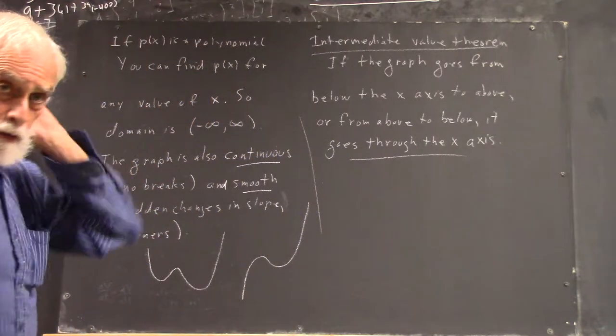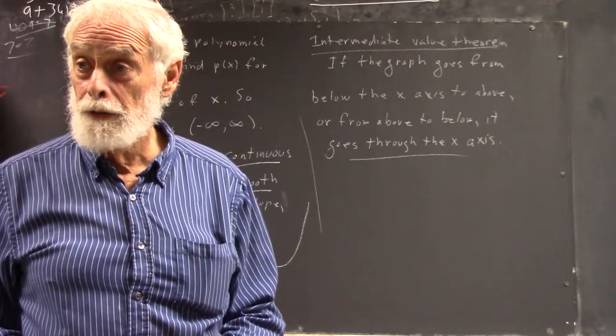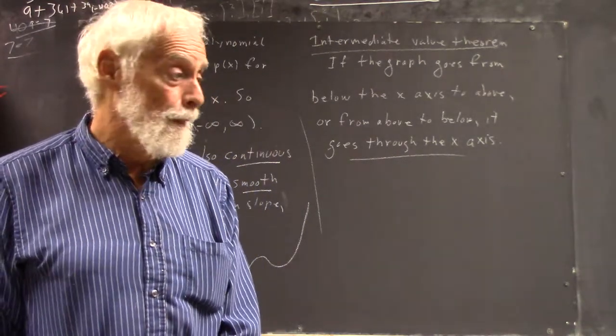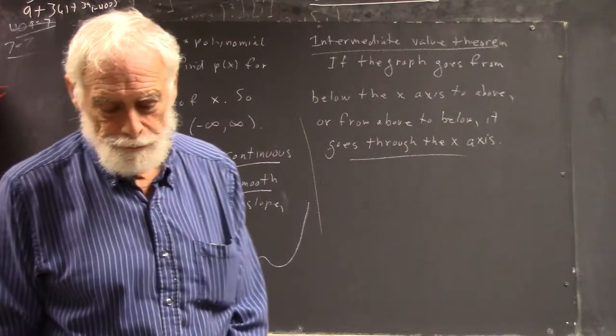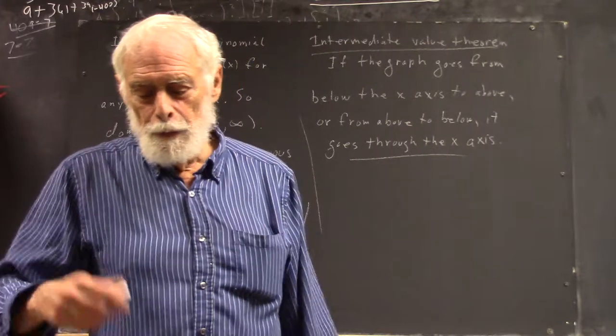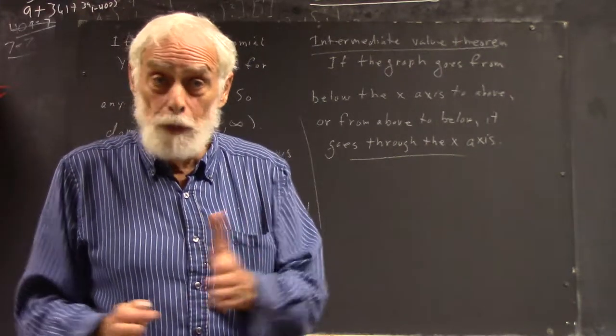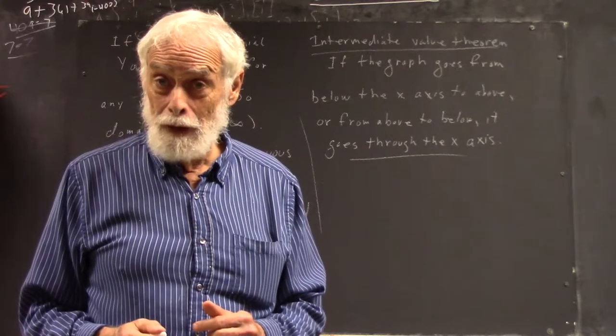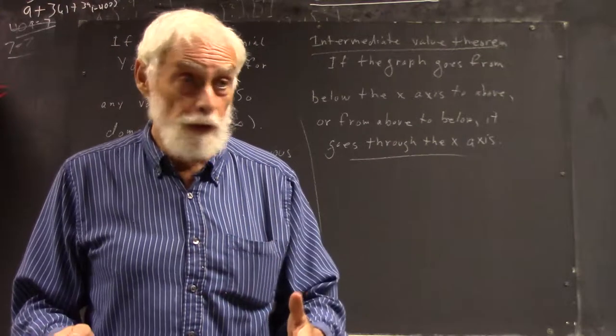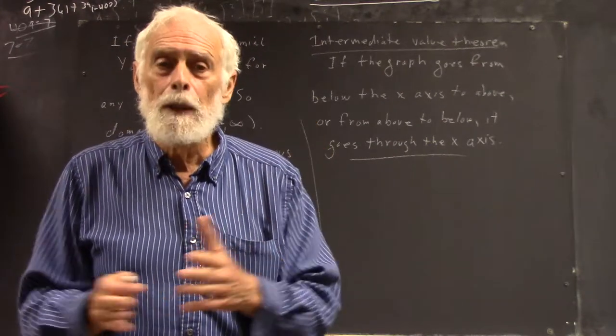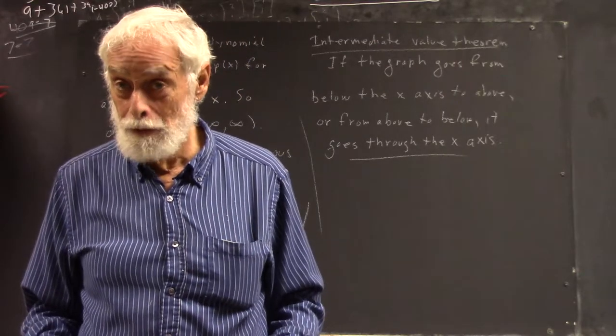And if we're looking for zeros, the places where a polynomial goes through the x-axis, if we find a point where it's below the x-axis and a point where it's above, we know there's a zero in between. So if we've got an interval where at one end of the interval it's below, on the other end of the interval it's above, some number in that interval gives you zero when you plug into the function.